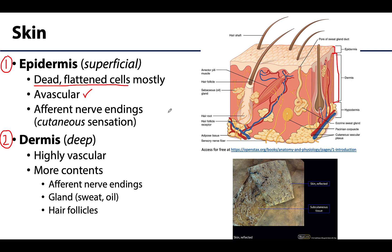What the epidermis does have are afferent nerve endings, often referred to in this area as cutaneous, which means skin sensation, although this is at a smaller amount than the neighboring dermis. We will discuss the term afferent more in subsequent videos, but for our purposes here, these nerve endings take information from the skin and external environment and bring it back to the central nervous system.